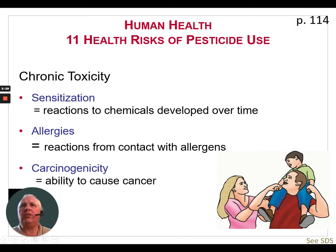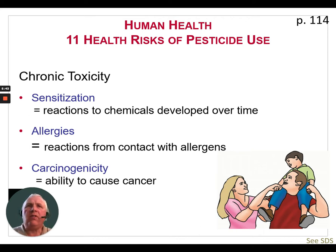When thinking about the results of toxicity and being exposed to pesticides, several things can happen. With chronic toxicity, we may have sensitization — a reaction to chemicals developed over time — where any exposure causes different reactions in your body. We can also develop allergies to these products, reactions from contact with allergens, and carcinogenicity, which is the ability of a product to cause cancer.